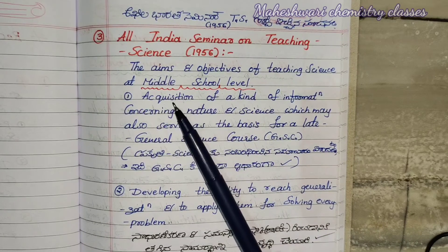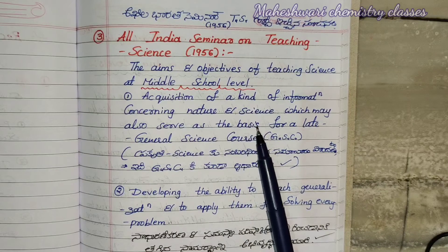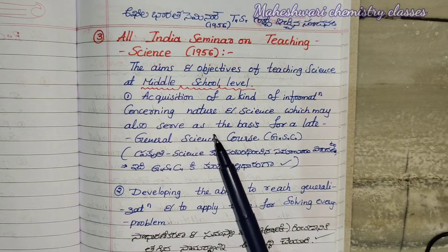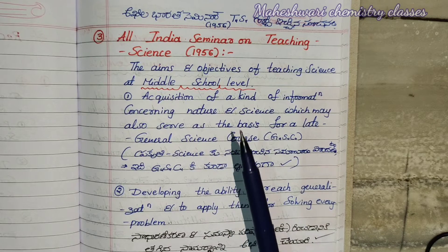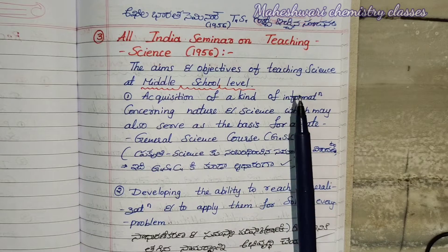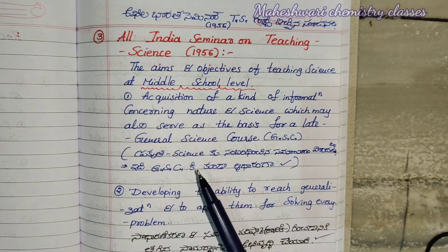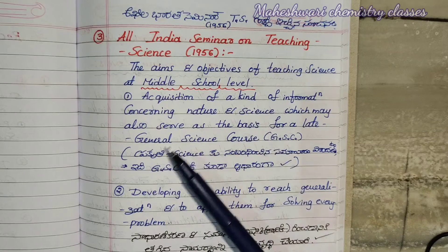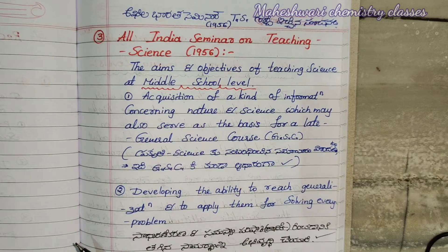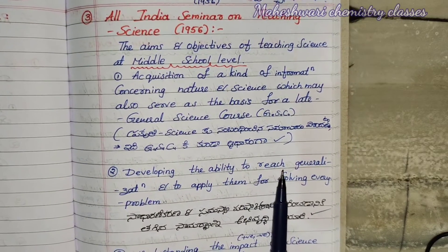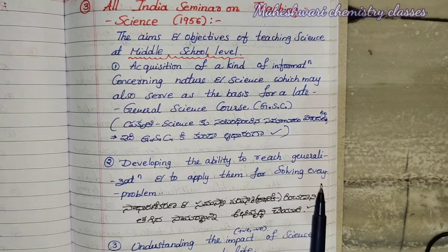The first one is the acquisition of a kind of information concerning nature and science, which may also serve as the basis for the later general science course. Second point is developing the ability to reach generalization and to apply them for solving every problem.